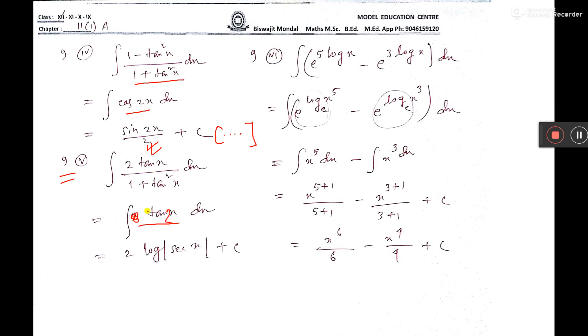Sorry, the sum done is wrong. (2 tan x)/(1 + tan²x), the formula is tan 2x. It is tan 2x.